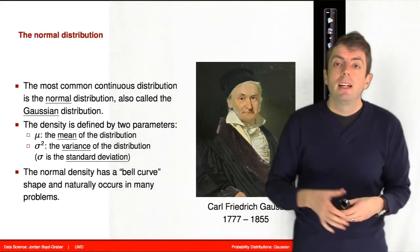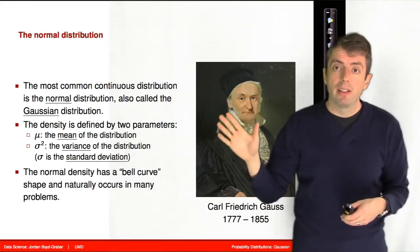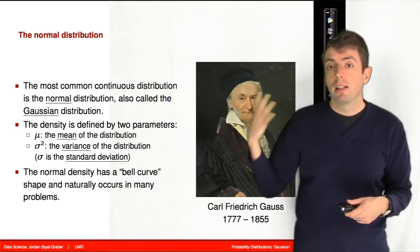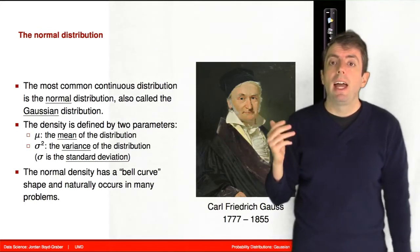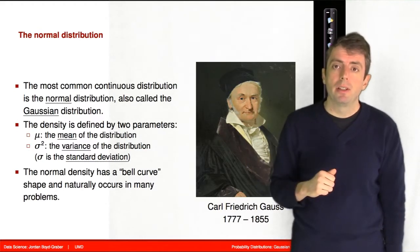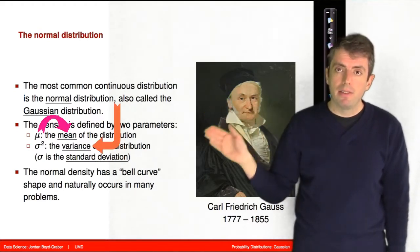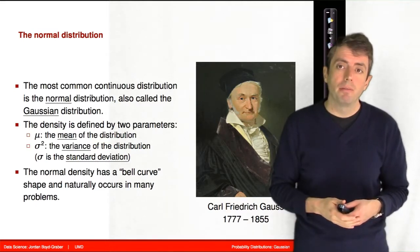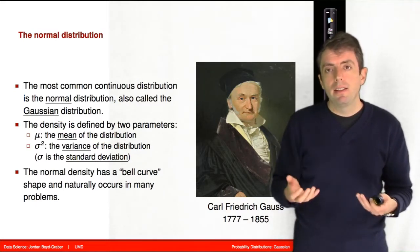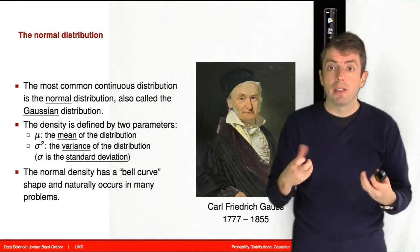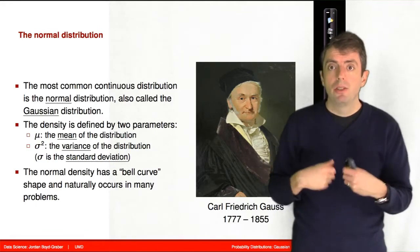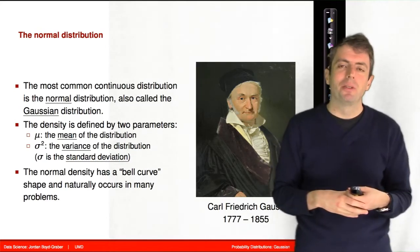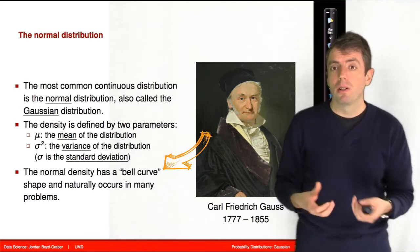Just like we had parameters that defined our discrete distributions, we have parameters that define our continuous distributions. In the case of the Gaussian distribution, we have a mean and a variance. These are the two parameters that define our distribution. These distributions help give shape to our normal distribution, but the standard shape that you'll see of a normal distribution is what's called a bell curve.